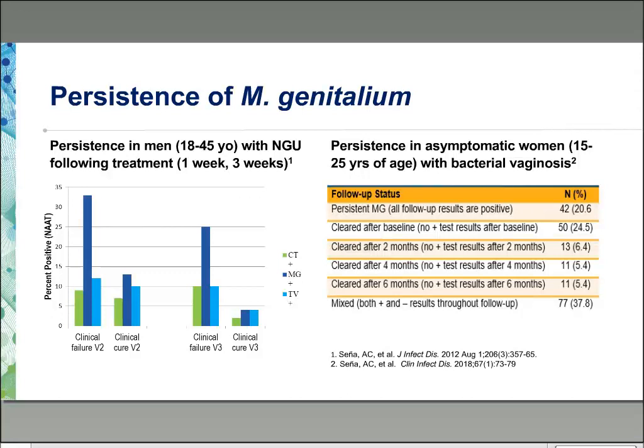In women, a study involving women aged fifteen to twenty-five with bacterial vaginosis collected specimens over twelve months via self-collected swabs shipped in from home. A twenty-one percent rate of persistent MGEN was observed among these asymptomatic women over the full twelve months, which is very concerning given the subsequent complications of pelvic inflammatory disease and infertility.